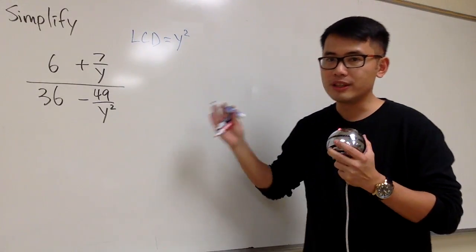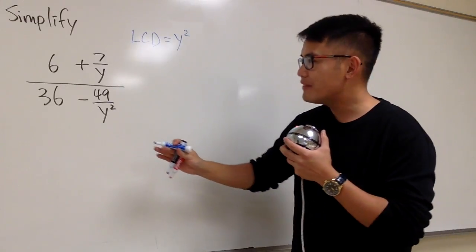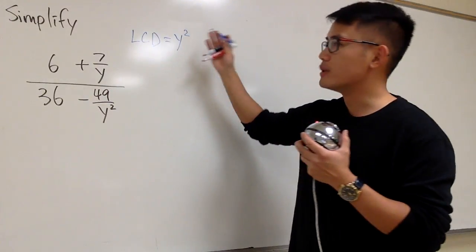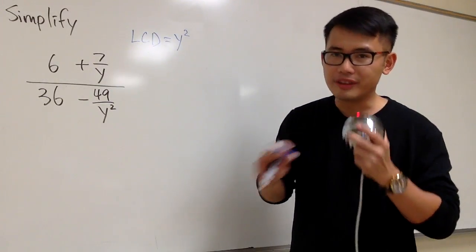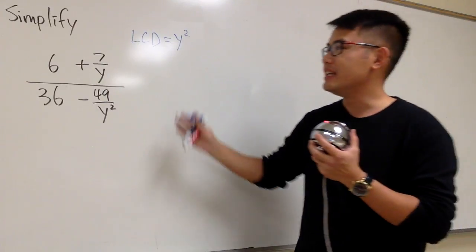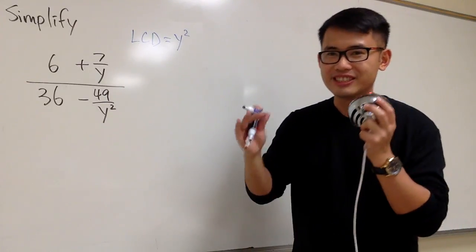And we know if we are doing this right or wrong, because after we multiply everything by the lowest common denominator, we should not have little fractions in the big fractions anymore. Let's check this out.